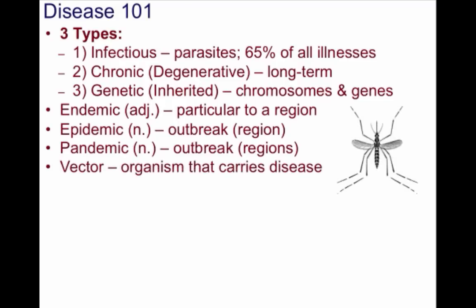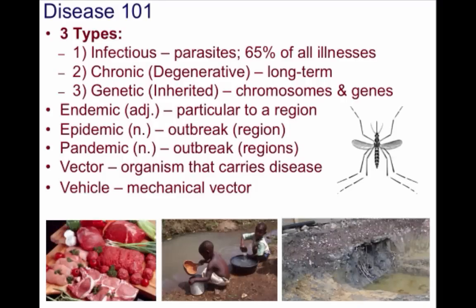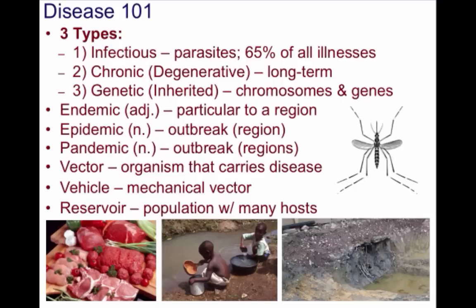A vector is an organism that carries disease — for example, a mosquito — whereas a vehicle is a mechanical, or non-living, vector that can transmit disease through food, water, or soil. And if you have a population with many hosts of people or animals, you have a reservoir.